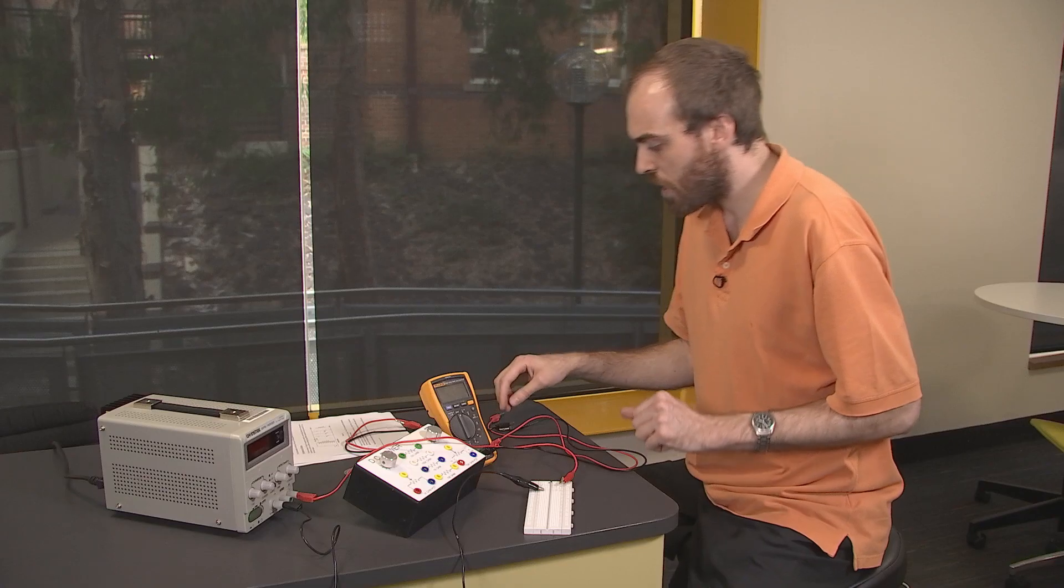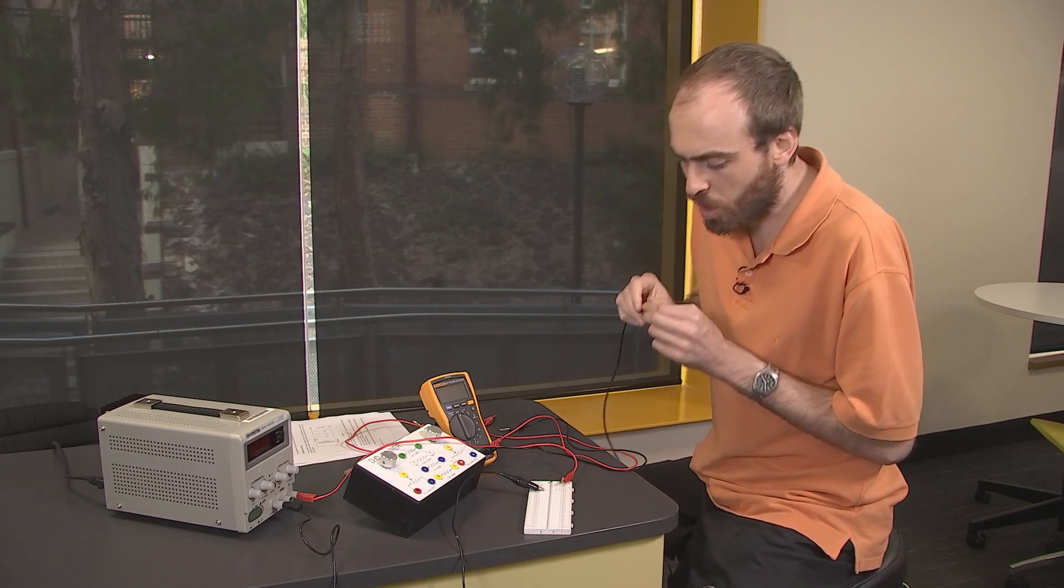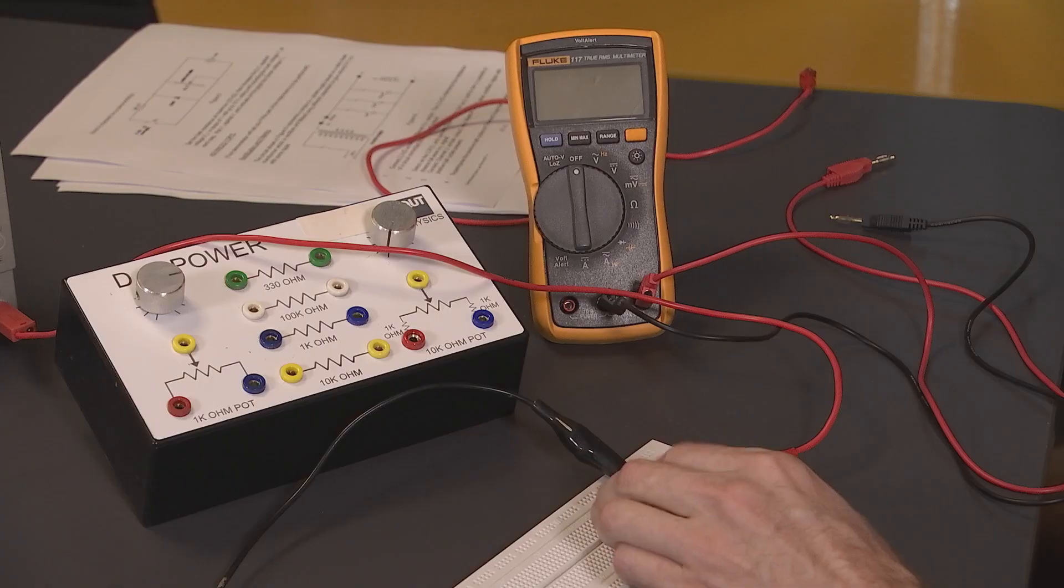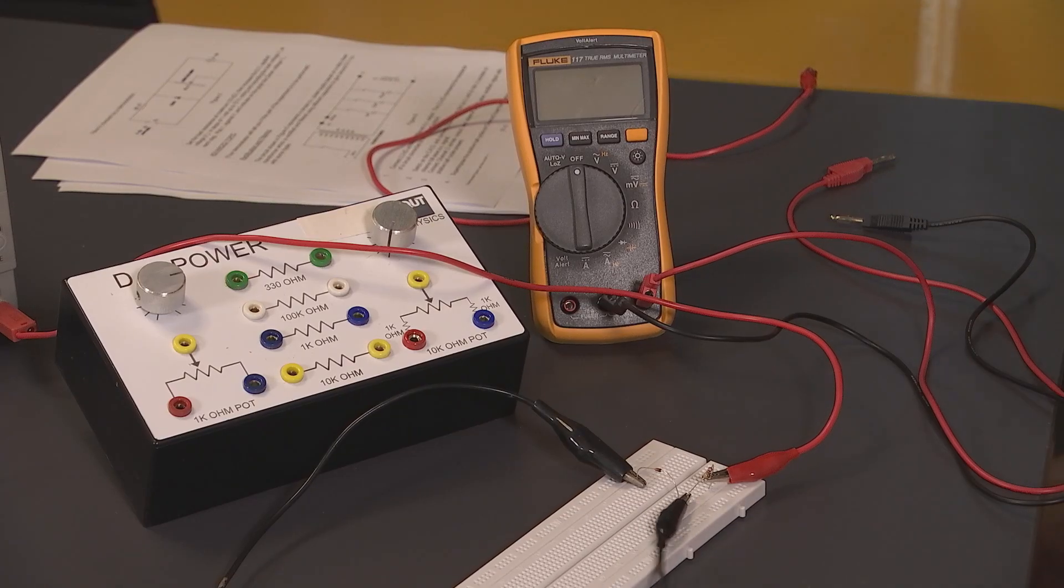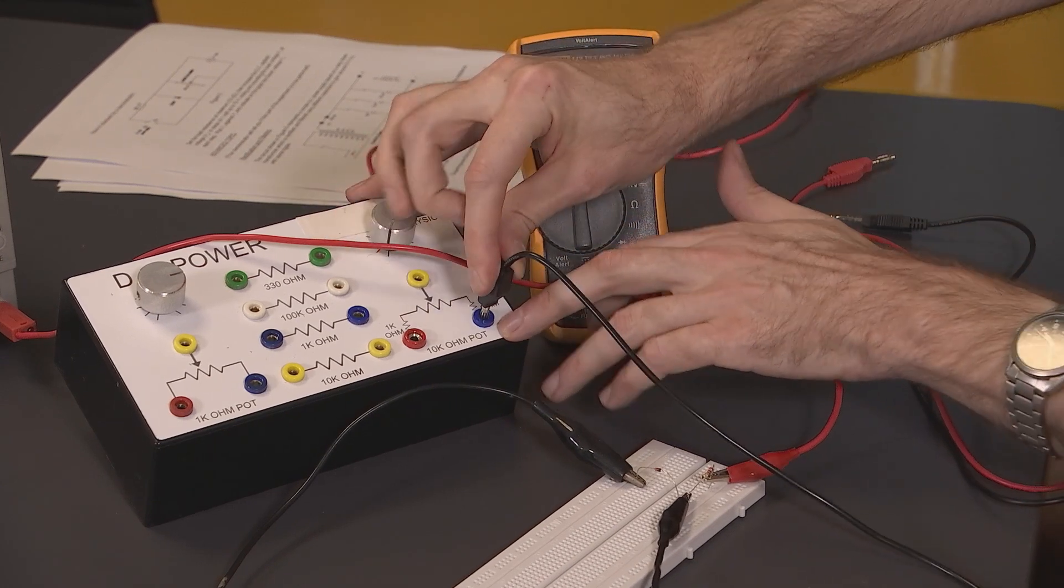I'm then going to take another lead, and I'm going to connect it from this point here to one end of the potentiometer. So we're going to be using the 10 kilo-ohm potentiometer in this part of the experiment.